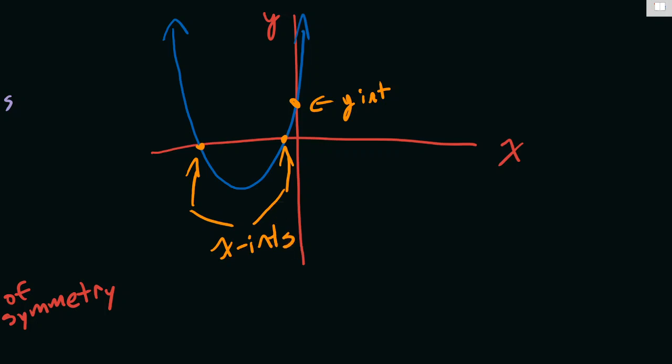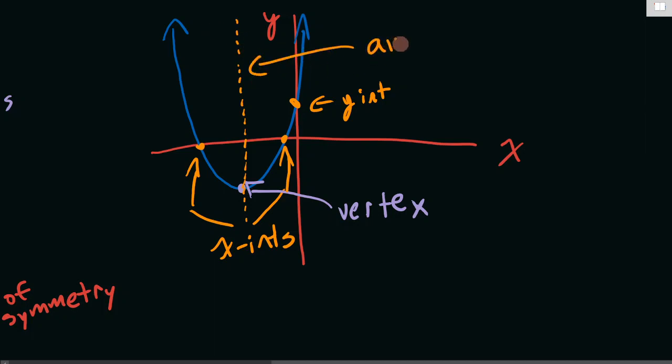The point in the middle is always called the vertex. The dotted line that goes down the middle is the axis of symmetry. And this parabola opens up.